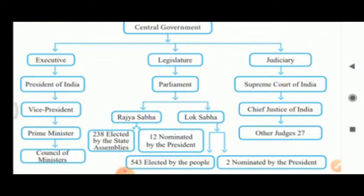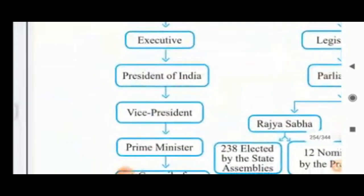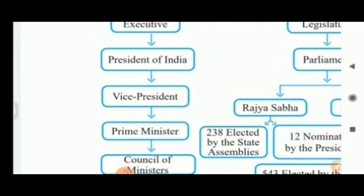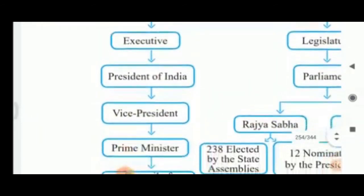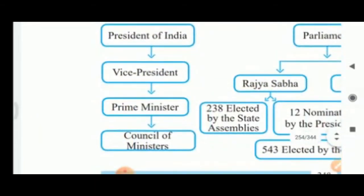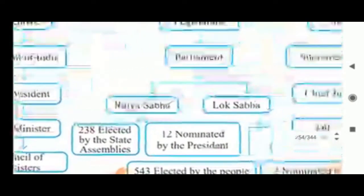Our central government consists of three wings: executive, legislature, and judiciary. The union executive consists of the President of India, the Vice President, the Council of Ministers headed by the Prime Minister, and the Attorney General of India.